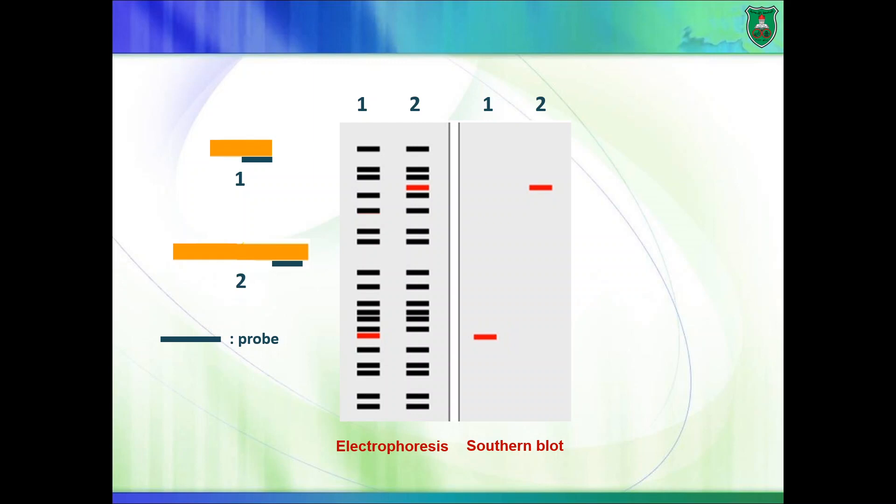These differences can be observed using southern blotting. If we take two human beings and take their DNA and fragment their DNA using enzymes, they would generate the same pattern, but there are differences.